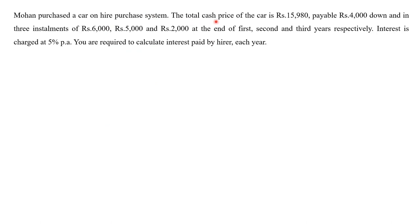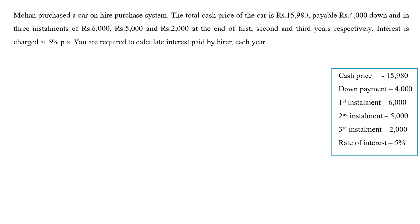Problem: The total cash price of the car is ₹15,980, payable ₹4,000 down and in three installments of ₹6,000, ₹5,000, and ₹2,000 at the end of the first, second, and third years respectively. Interest is charged at 5% per annum. You are required to calculate the interest paid by the hirer each year. The information given: cash price ₹15,980, down payment ₹4,000, three installments of ₹6,000, ₹5,000, and ₹2,000, and rate of interest 5% per annum.